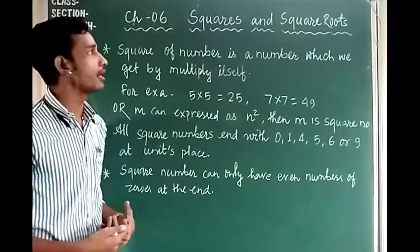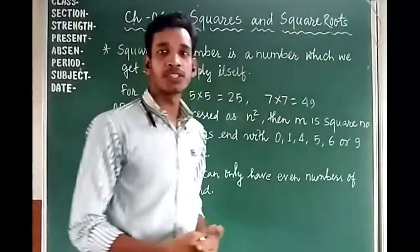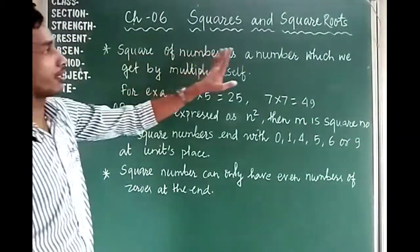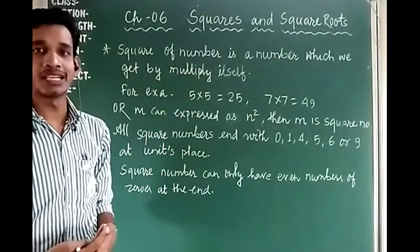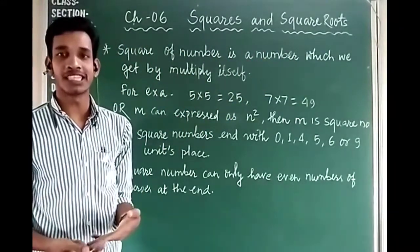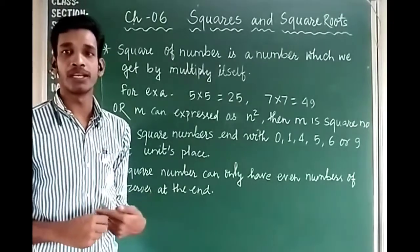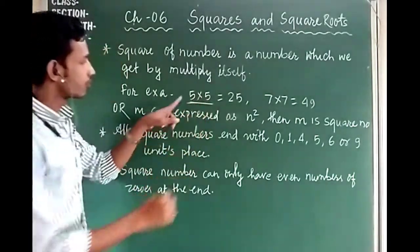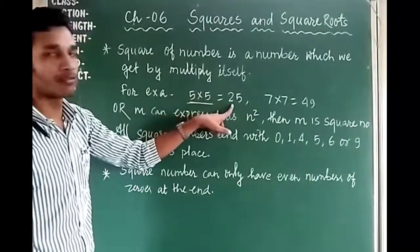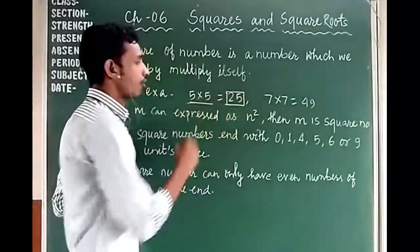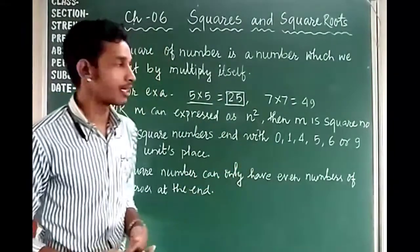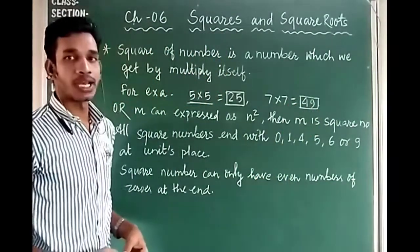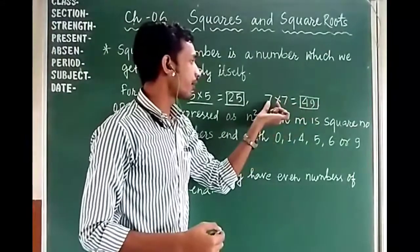First of all we need to know what is the square. The square of a number is the number which we get by multiplying it by itself. For example, if we take 5 and multiply 5 by 5, that equals 25, so 25 is the square number of 5. Another example: 7 multiplied by 7 gives us 49, so 49 is the square number of 7.